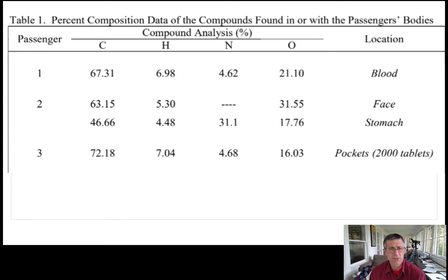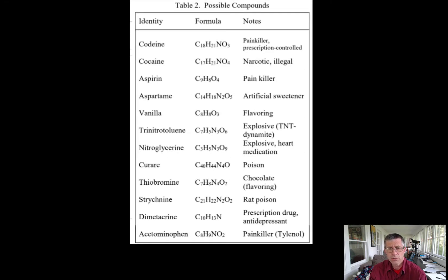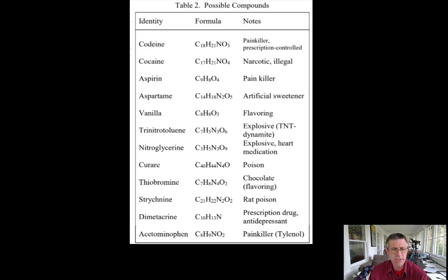So the first one — reading across — passenger number one had this much carbon, this was hydrogen, this was nitrogen, and this was oxygen found in something found in the blood of that person. Passenger number two had two samples taken — one from a substance found on that person's face and another in their stomach. All of the things we identify in this exercise will be one of these compounds: codeine, cocaine, aspirin, aspartame, vanilla, chocolate, or rat poison.